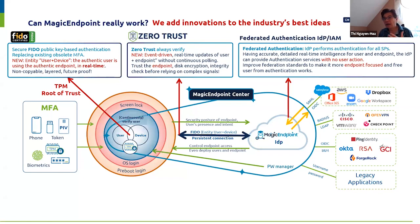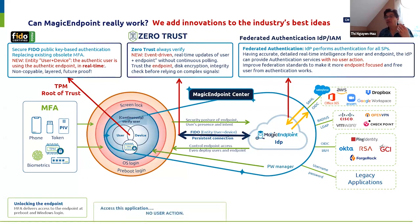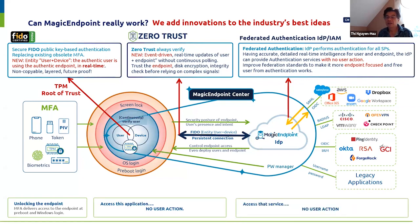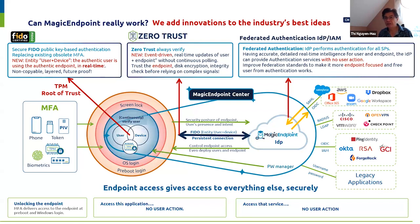To recap, with our solution, the user logs into the endpoint with MFA — as secure as you wish — ideally at pre-boot as well. Then for applications and services, there's no more user action required because, like we said in the beginning, endpoint access should give access to everything else securely. You just have to use the endpoint correctly. So your users don't have to do anything for authentication except log into the endpoint and continuously let the endpoint verify and do whatever it needs.